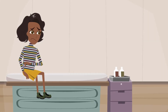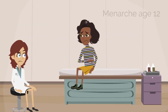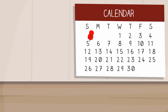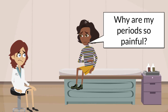Let's meet our patient. Our patient is a 19-year-old female who presents to your clinic for dysmenorrhea. Menarche was at age 12, and menstruation has been painful for as long as she remembers. She has regular monthly cycles that last 5 days. Pain begins on day 1, gradually decreases, and is gone by day 3. She asks you: why are my periods so painful?